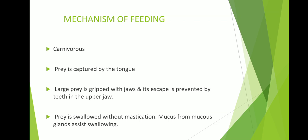This swallowing is brought about by three factors: first, the upward pressure of the throat; second, the downward pressure of the eyeballs; and third, peristalsis in the esophagus. Additionally, mucus secreted by the mucus glands in the buccopharyngeal cavity lubricates the food to assist swallowing.